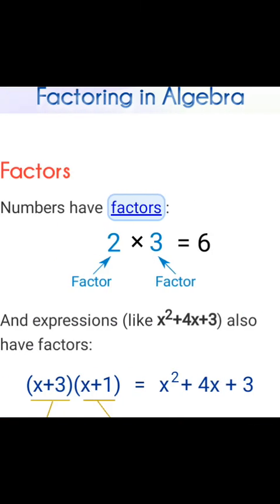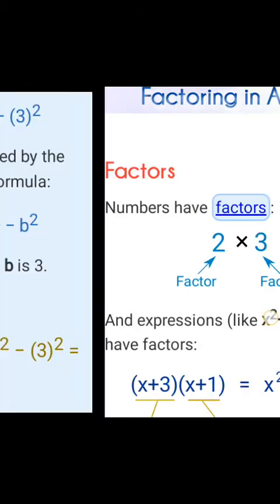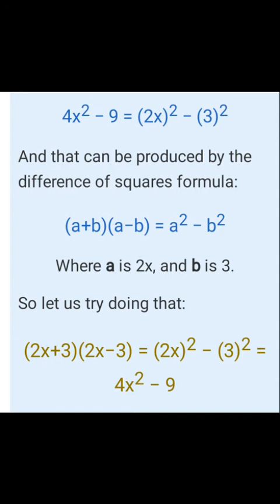Factorizing in algebra means dividing an expression into its multiplication parts. For example, 6 = 2 × 3. Similarly, x² + 4x + 3 can be factored as (x+3)(x+1). To do this, we can use some formulas like (a+b)(a−b) = a² − b².